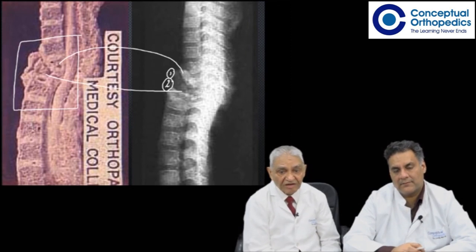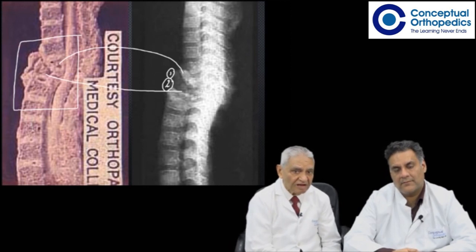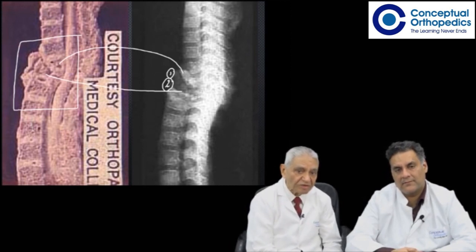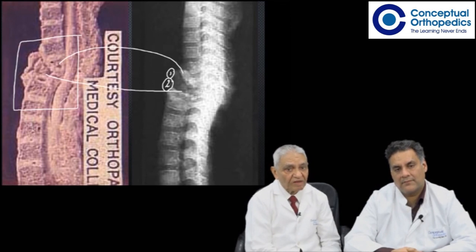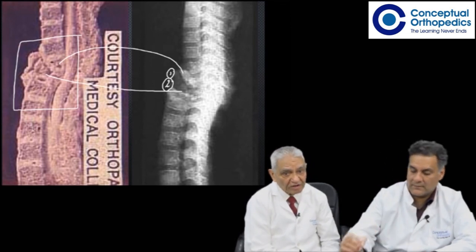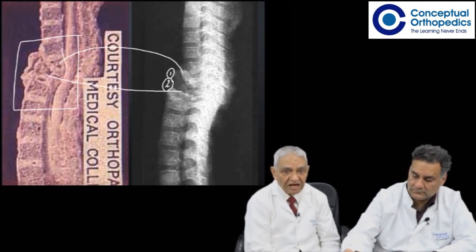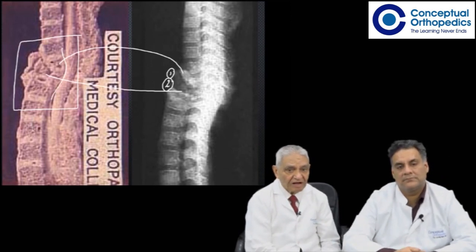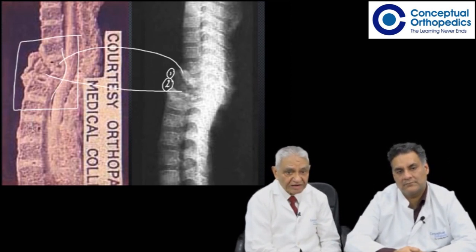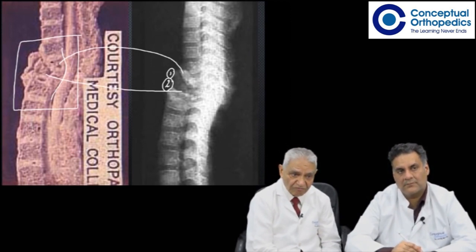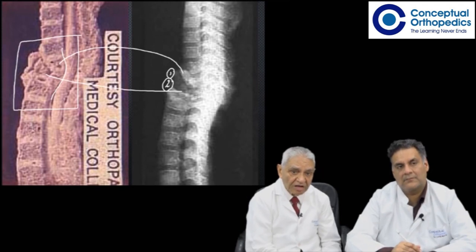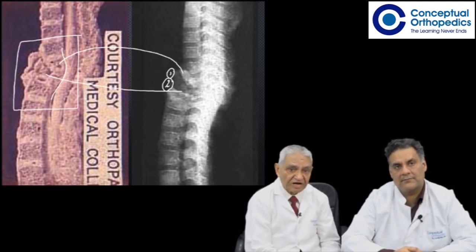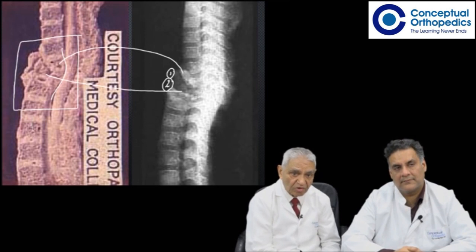The X-ray you are seeing is not an X-ray of a patient; it is an X-ray of this specimen. One can see the gradual deformation taking place in the vertebral column. The cord and dural tube have tolerated this angulation because in tuberculosis of the spine the deformity takes place very, very slowly.